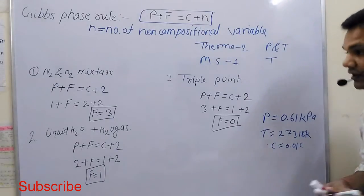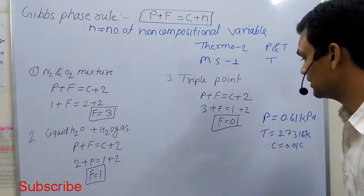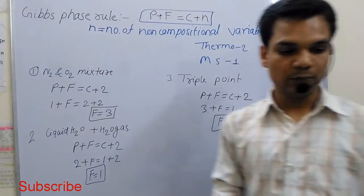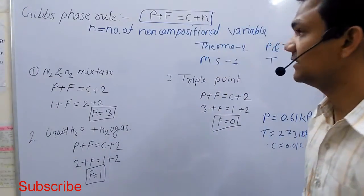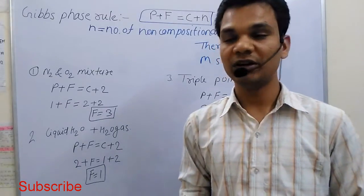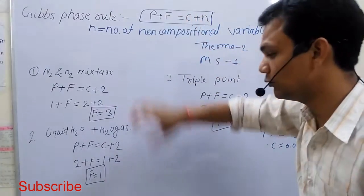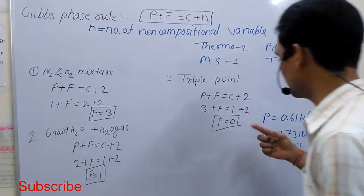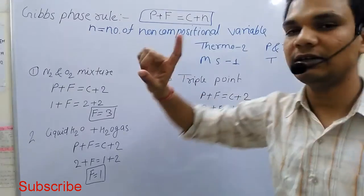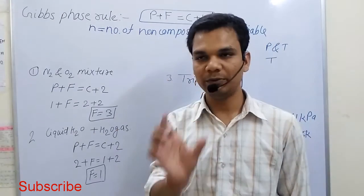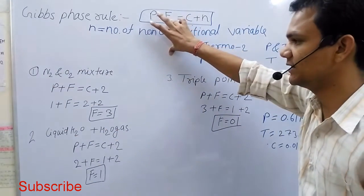At the triple point, we have no independence to fix the state of the system because degree of freedom is 0. Degree of freedom is the minimum number of intensive properties required to fix the state of the system. In thermodynamics, degree of freedom is the minimum number of intensive properties required to fix the state of the system.